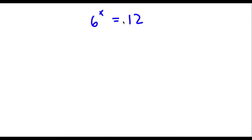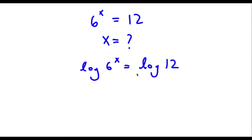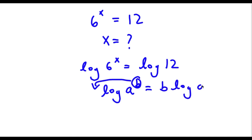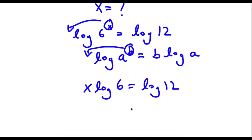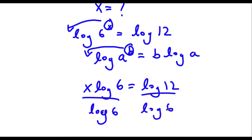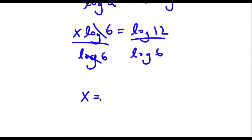Alright, so I have 6 to the power of x is equal to 12, and I want to find the value of x. So the first thing I'm going to do is take the log on both sides. So now I have log 6 to the power of x is equal to log 12. Using the logarithm property, I can move the exponent x to the front. So I have x times log 6 is equal to log 12. Now I'm going to divide by log 6 on both sides, so x is equal to log 12 over log 6.